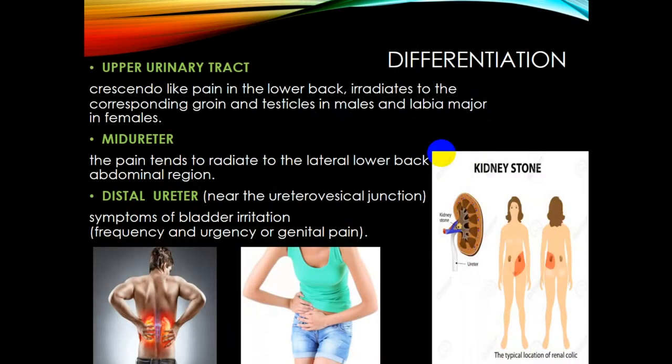The localization of a stone in different parts of the urinary tract causes different symptomatic signs. Upper urinary tract involvement produces a crescendo-like pain in the lower back that radiates to the corresponding groin and testicles in males and labia majora in females. So a person with a kidney problem may have pain in the genitals — this is important for differentiated diagnosis.